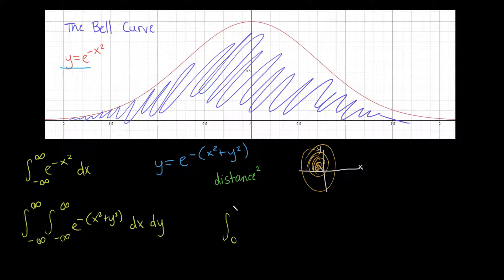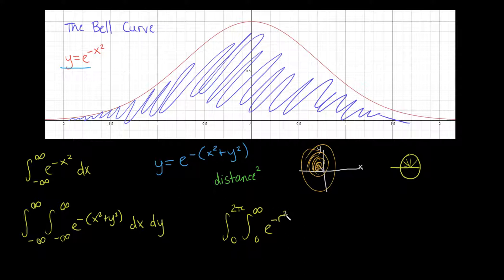Let's write down the polar integral. We start with angle from 0 to 2π, then radius from 0 to infinity — you only need 0 to infinity because as you sweep all angles you cover every point. The integrand becomes e to the negative r squared, with dr dθ. But there's one more important thing: in polar integrals, you have to multiply the expression by r.